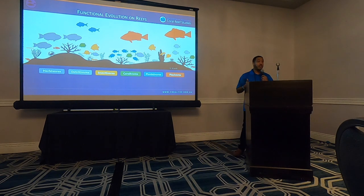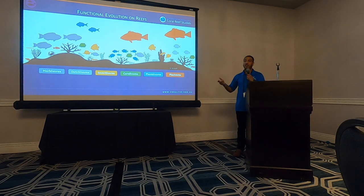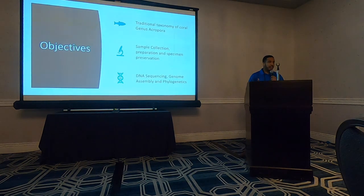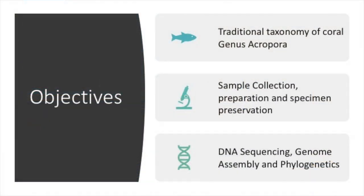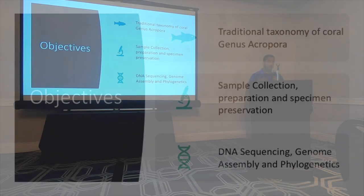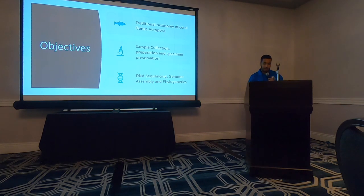Some researchers are even going out and replanting certain corals in areas, but based on my research, we're finding out that we don't even know what corals are there, so it's really hard for us to determine which corals we need to replant back into the reef. My talk has three objectives: the traditional taxonomy and classification of Acropora, sample collection and preservation for the museum, and how I used DNA sequencing to build phylogenetic trees for these coral species.